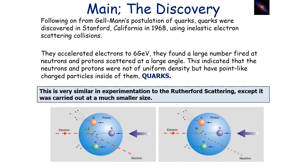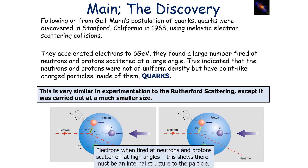Following Gell-Mann's postulation of quarks, they were discovered in Stanford, California in 1968 using inelastic scattering collisions with electrons. In these experiments, electrons were accelerated to 6 GeV, and a large number fired at neutrons and protons scattered at a large angle. This indicated that neutrons and protons were not of uniform density, but had point-like charged particles inside them — which were the quarks. This is very similar to Rutherford scattering, but carried out on a much smaller scale.